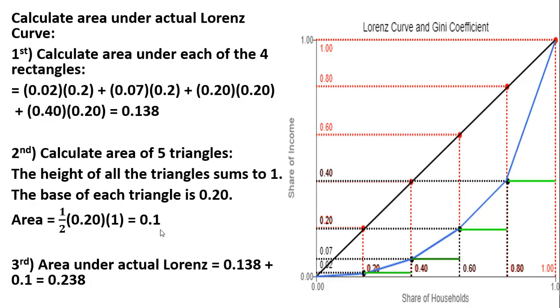So the third step is to take our answer from part one and part two and add them together. The area under the actual Lorenz curve, the area under this blue line here, this blue curved line, is going to be 0.238.